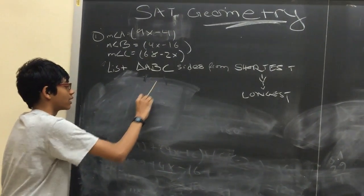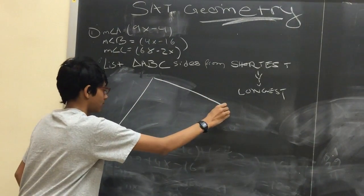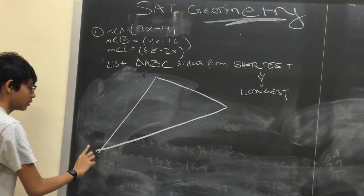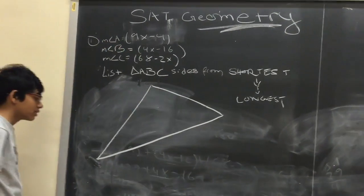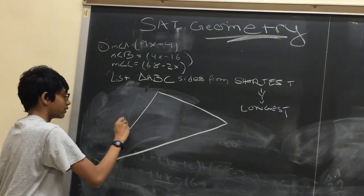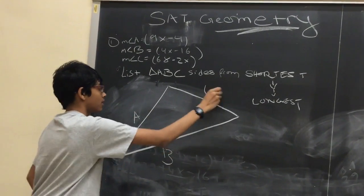So let's first draw out our triangle, make it pretty big so we can write out the angle measures. We are given three angle measures for each of the corresponding sides.